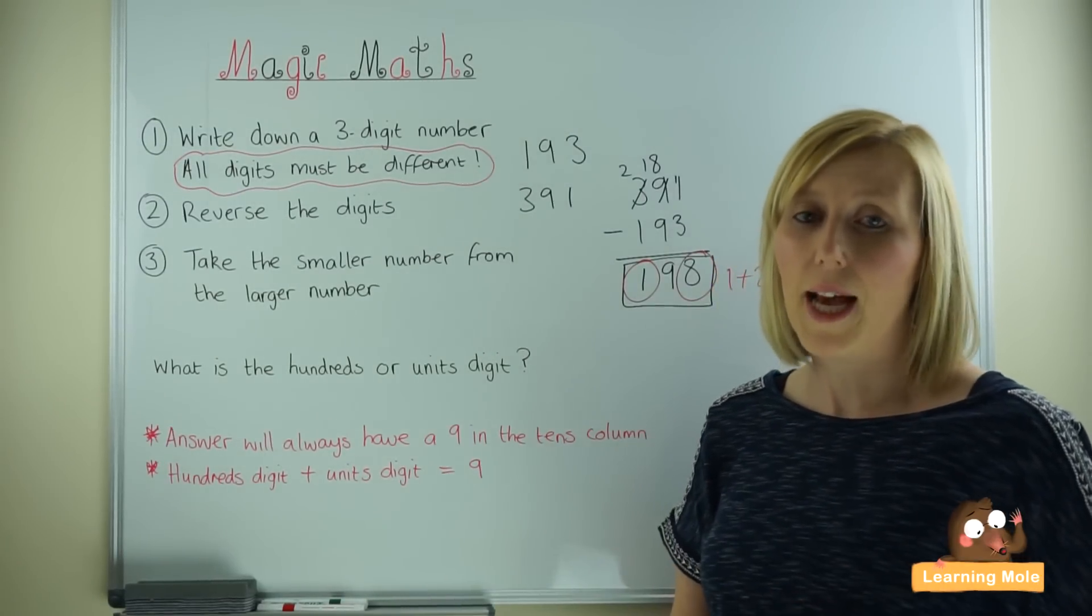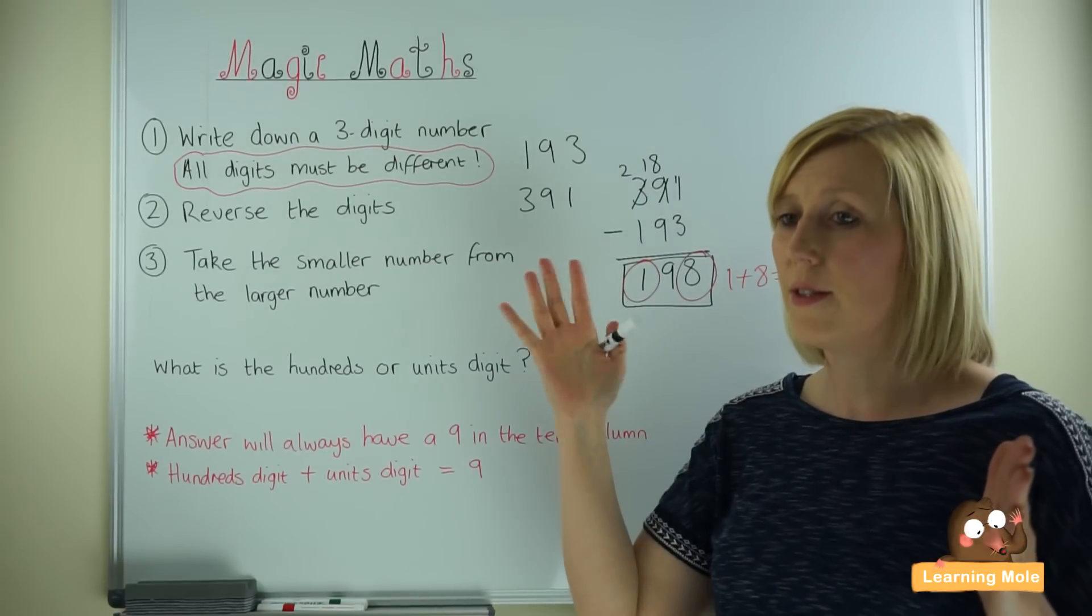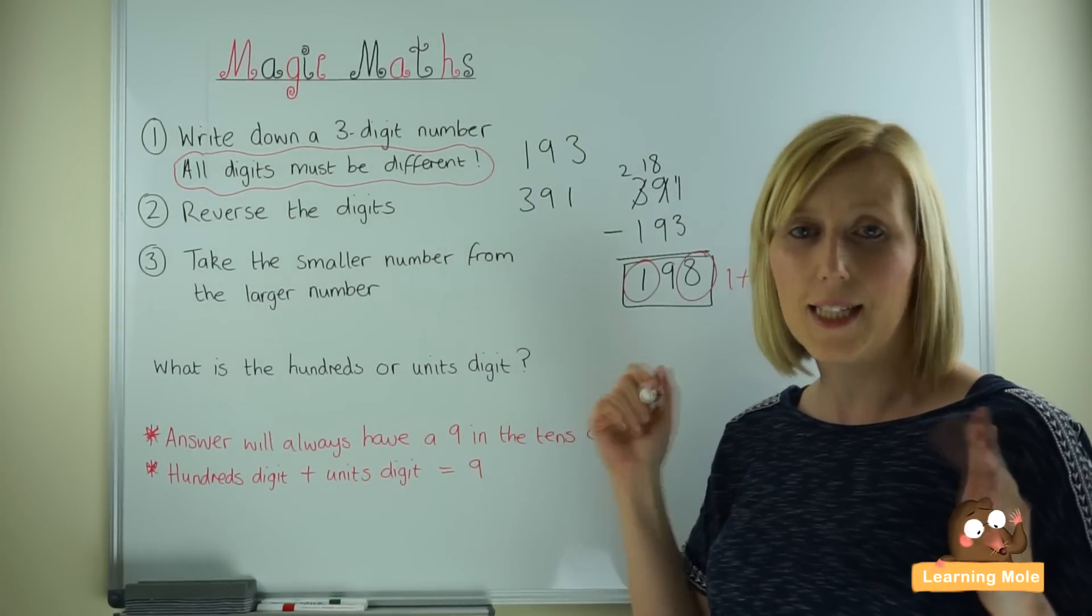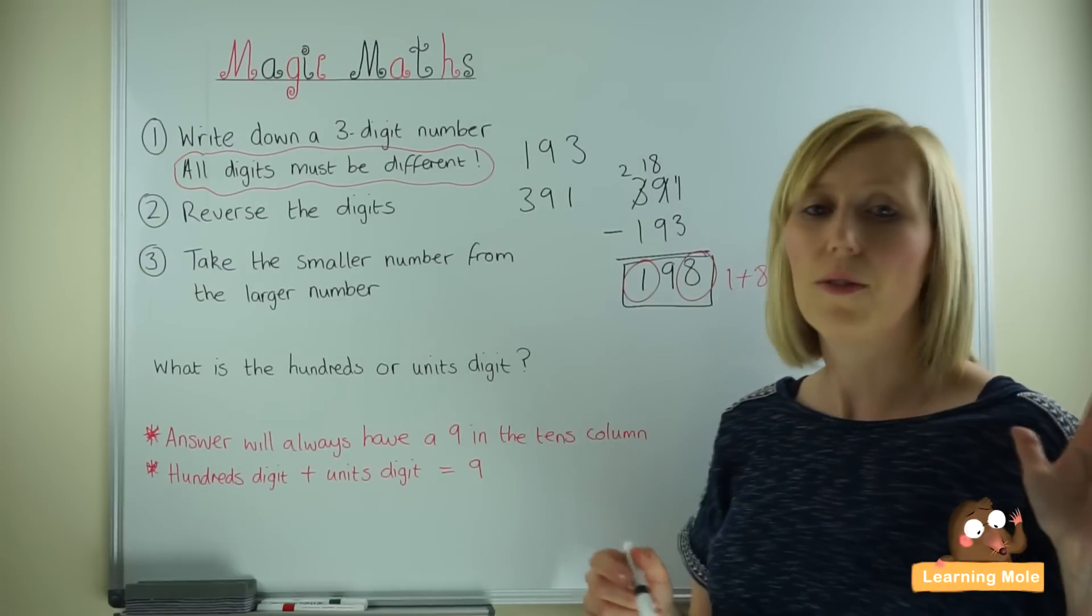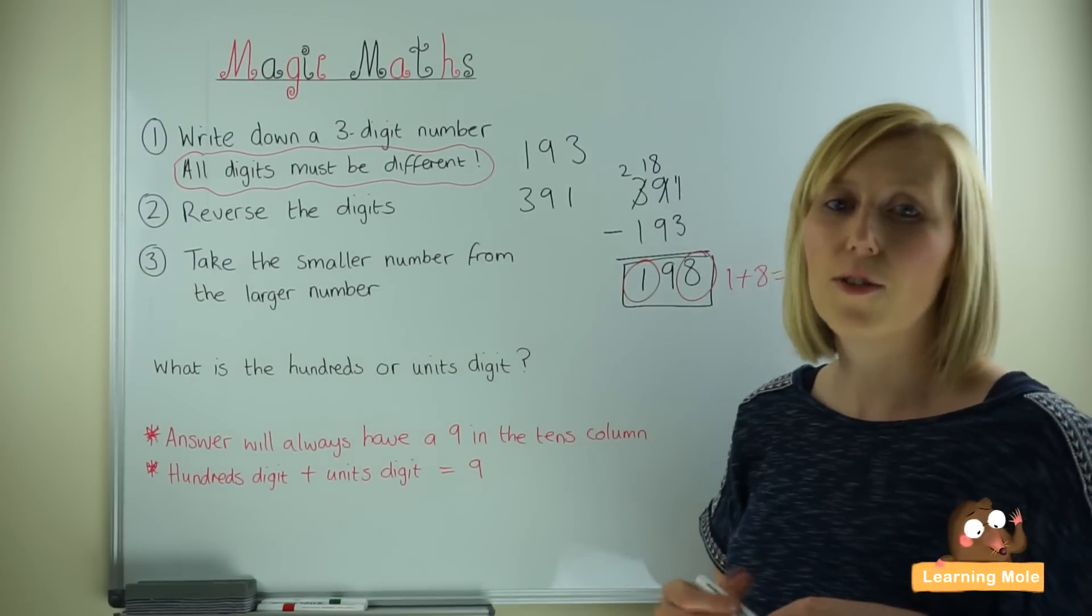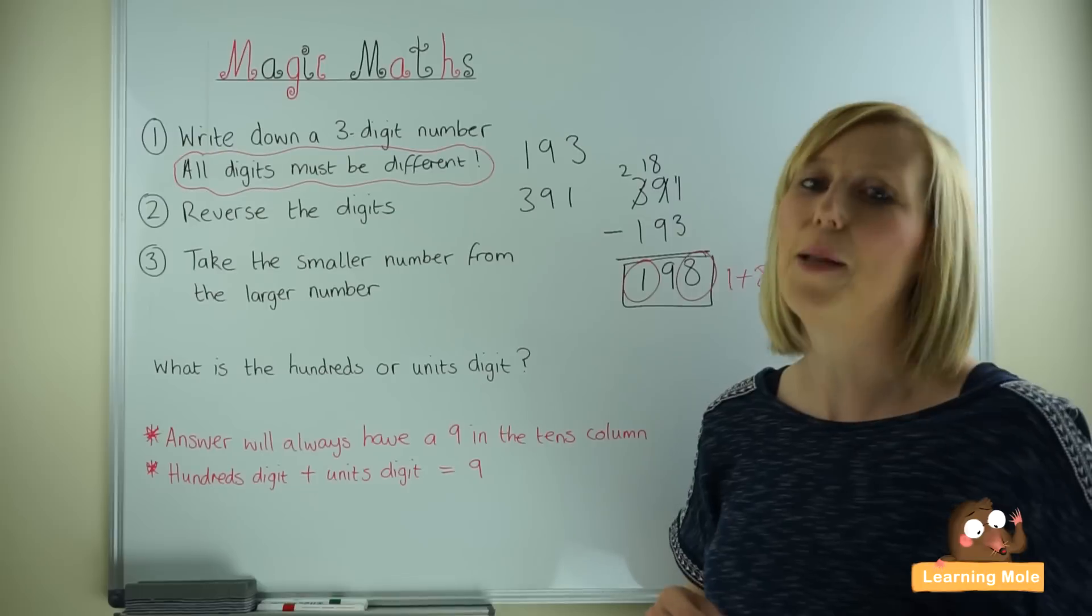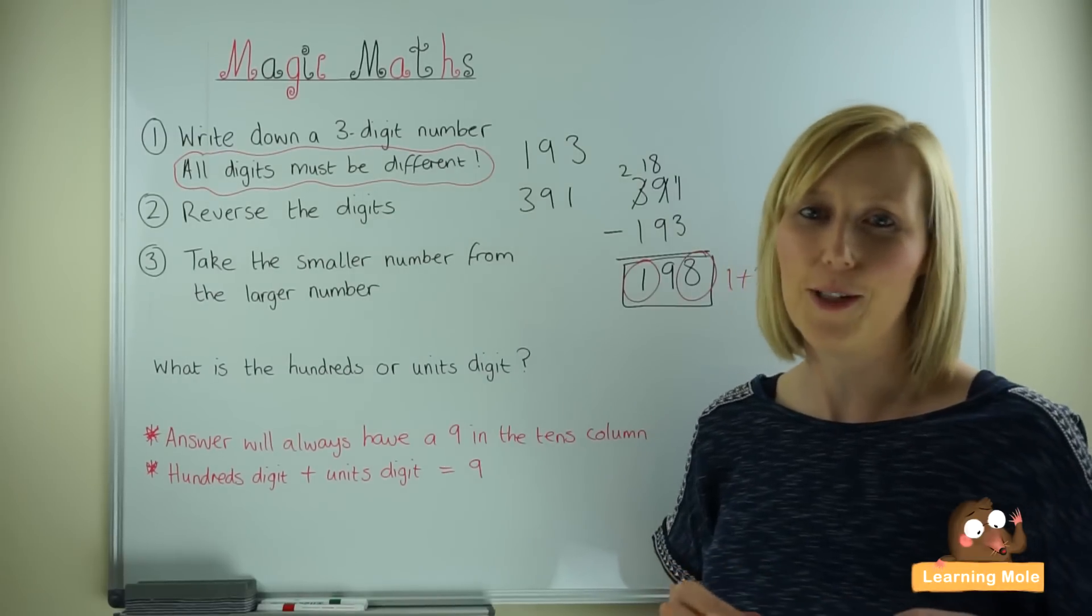So I will know that 1 plus something in the units has to make 9. So I'll know that there's an 8 in the units. I already know that the tens number is always 9. So I'm going to be able to guess the number is 198 and imagine how impressed they're going to be with that.